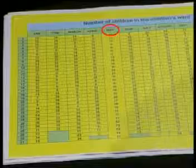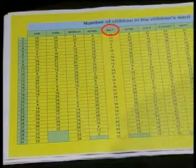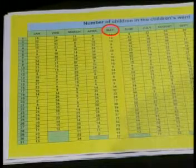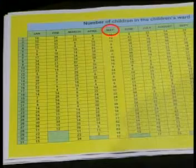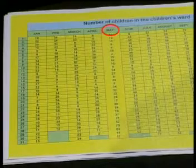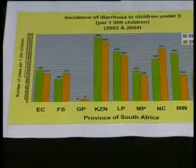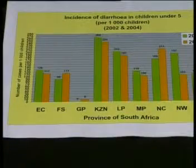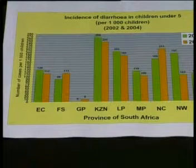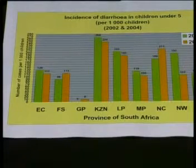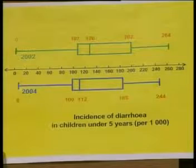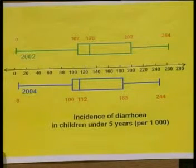For example, we considered the number of beds needed in the children's ward — our data set was the numbers of beds. We also looked at two univariate sets of data about children under the age of five admitted to a hospital with diarrhoea for two different years and compared them with each other.